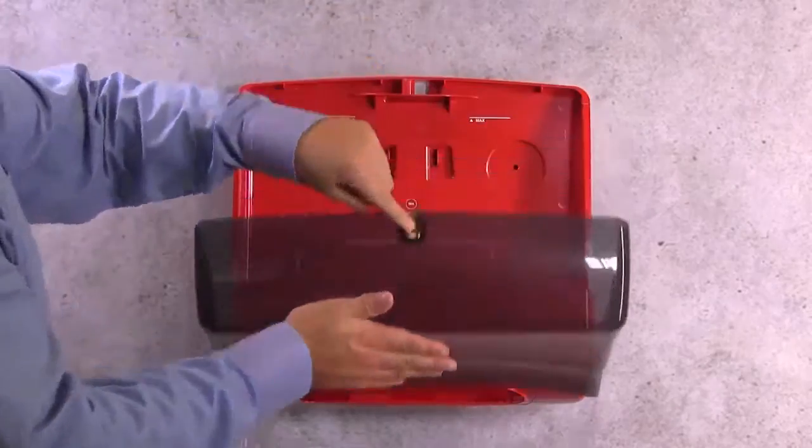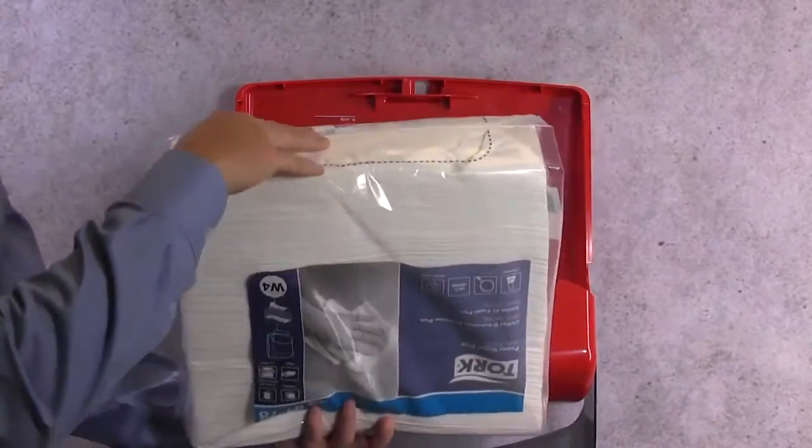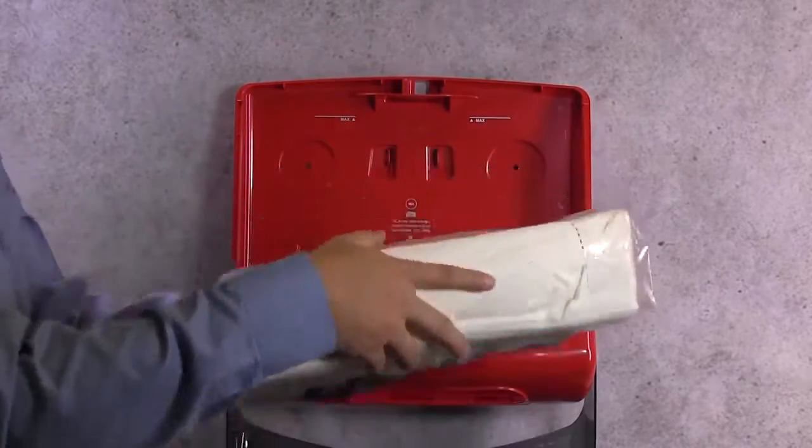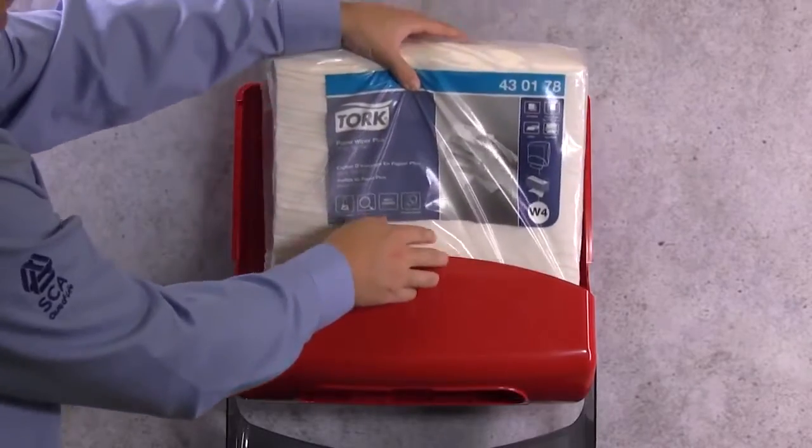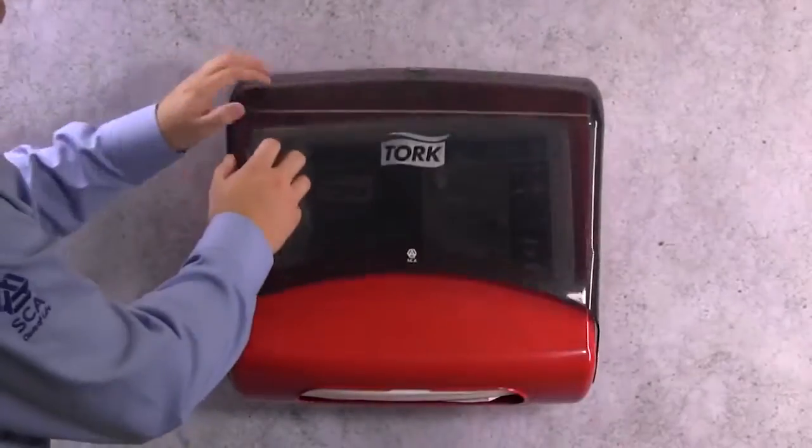Take your Torque wiper refill and open the perforated bottom. Place the pack into the dispenser, close the cover, pull the first wiper through the opening and your dispenser is ready for use.